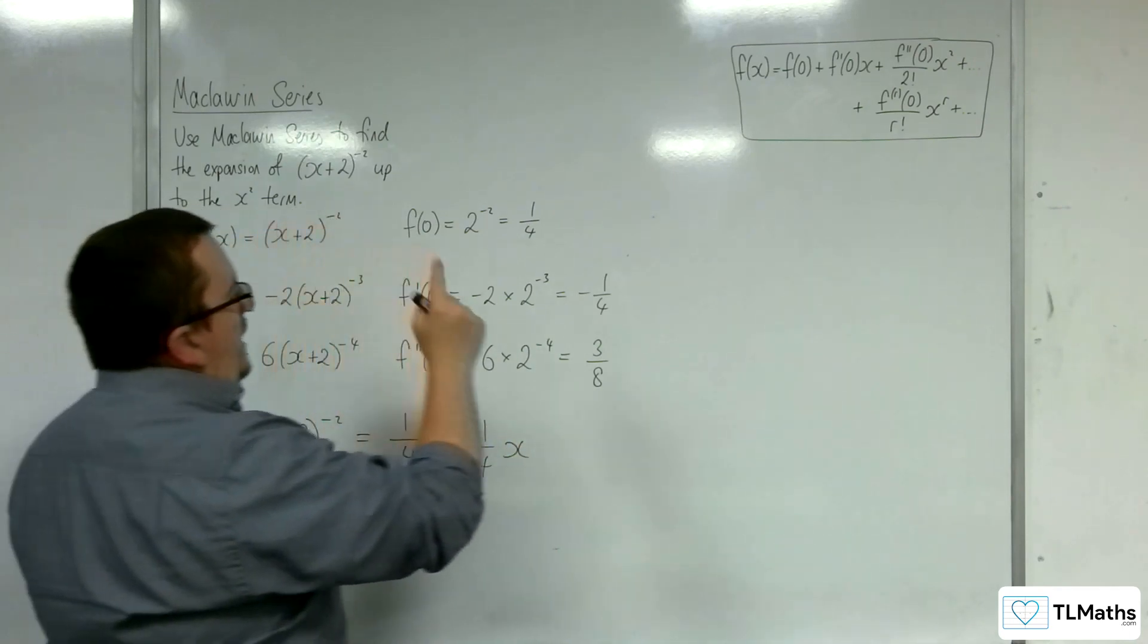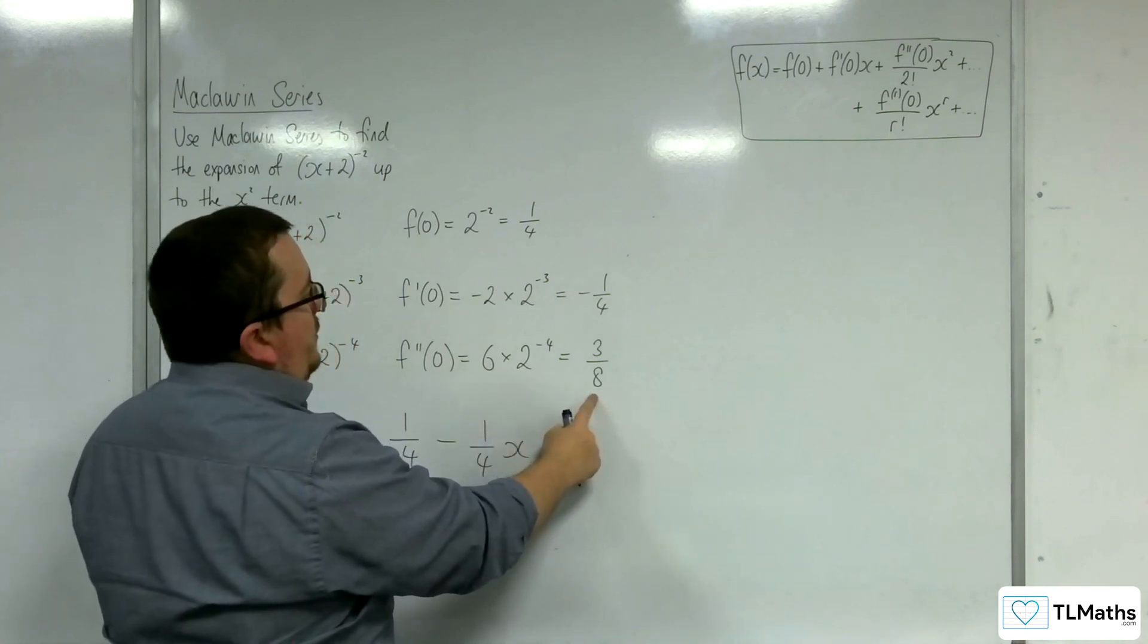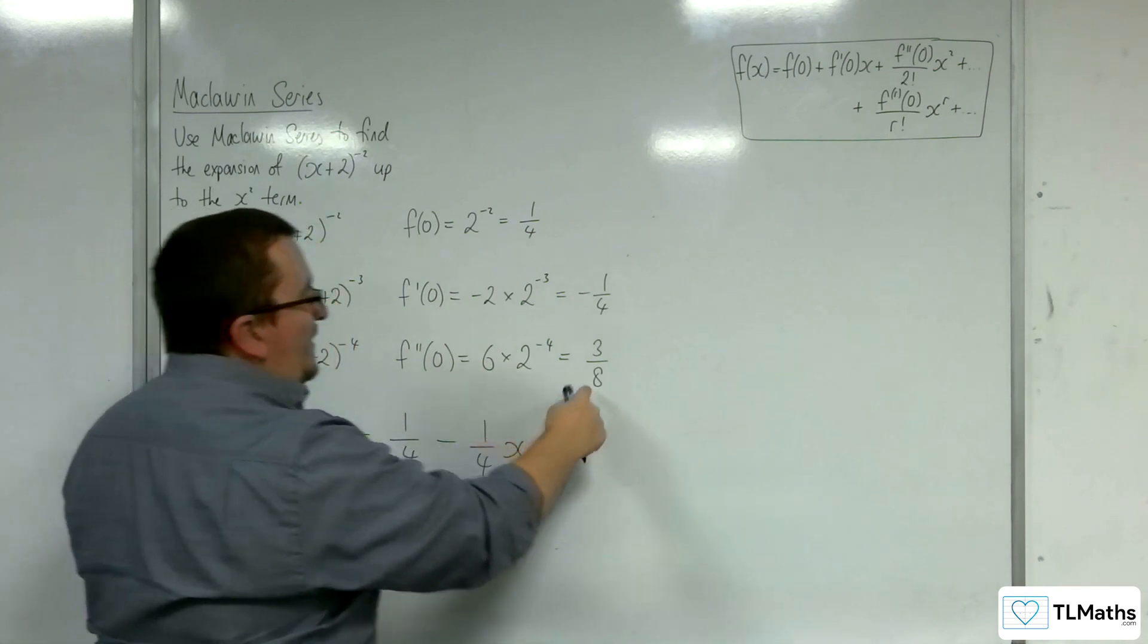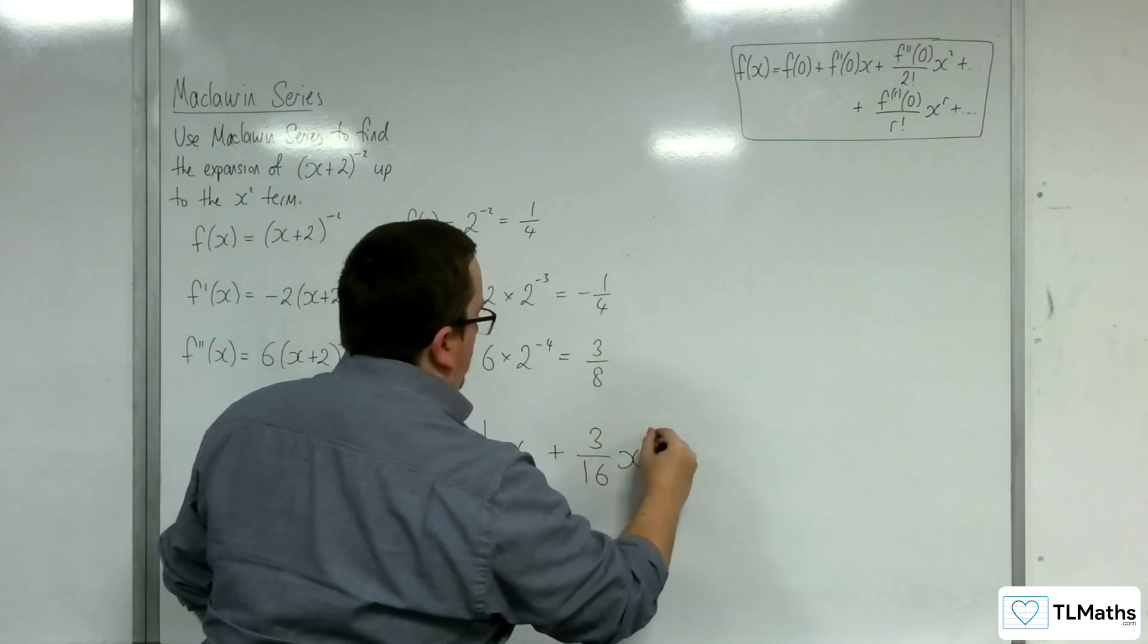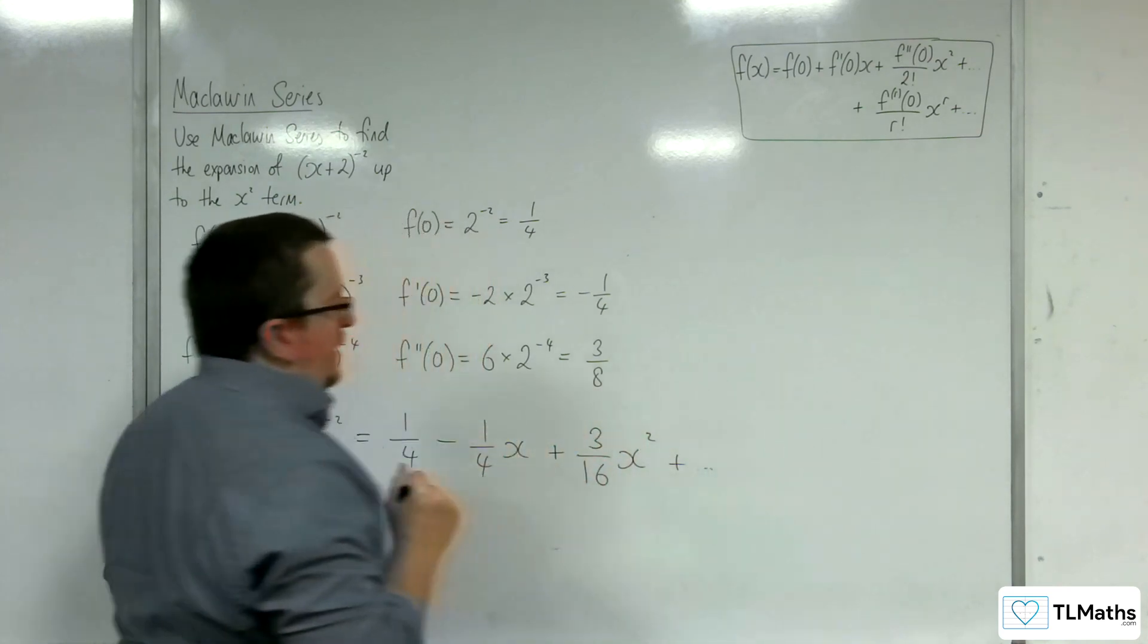And then plus f''(0) divided by 2 factorial, so 3/16 now, x². Plus a host of other terms.